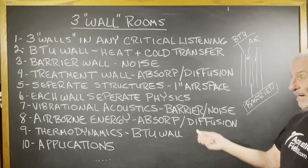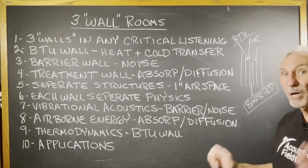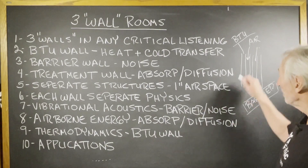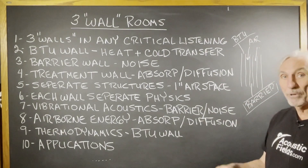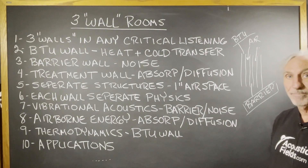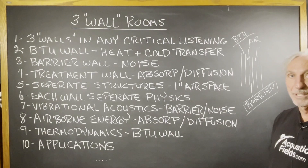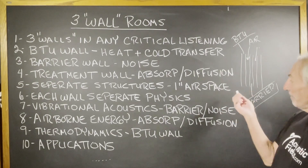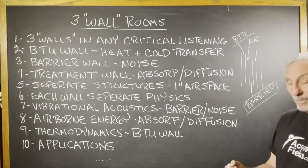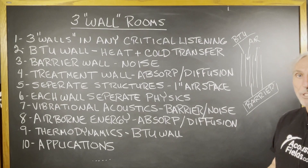We can never combine the absorption and diffusion wall with the others — that wall has to be separate. People do it all the time: they use BTU walls for heat and cold as sound-absorbing walls. You can't do that. Wrong rate and level. Wrong physics. Wrong design. So you have to separate these walls, separate their function, and apply each function to deal with all the issues you're facing.